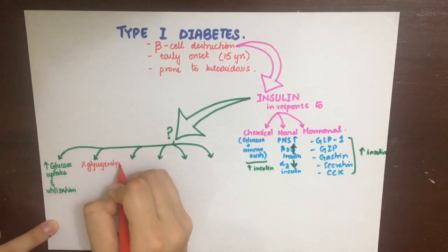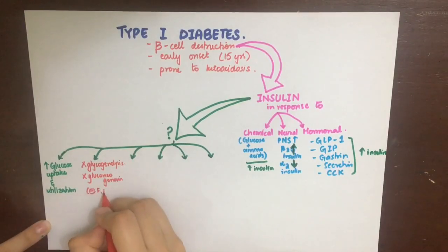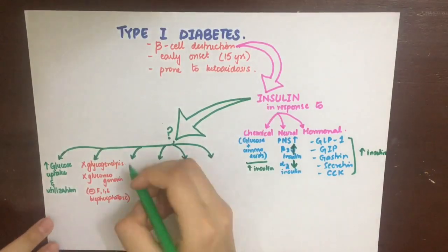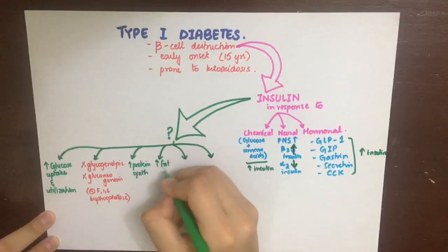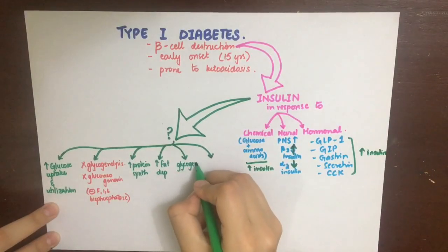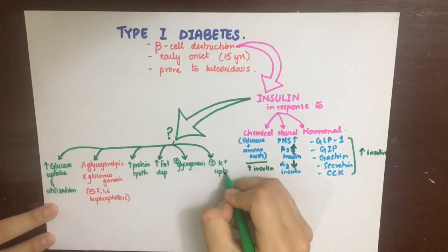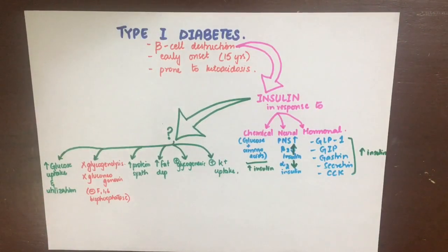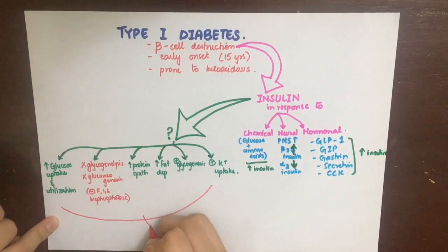Insulin will inhibit gluconeogenesis in the liver by inhibiting the rate-regulating enzyme fructose-1,6-bisphosphatase. Thirdly, it will increase protein synthesis, increase fat deposition and storage in adipose tissue, augment glycogenesis in the liver and muscle, and also increase potassium uptake. By carrying out all of these processes, insulin maintains blood glucose levels between 110 and 126 mg per deciliter.